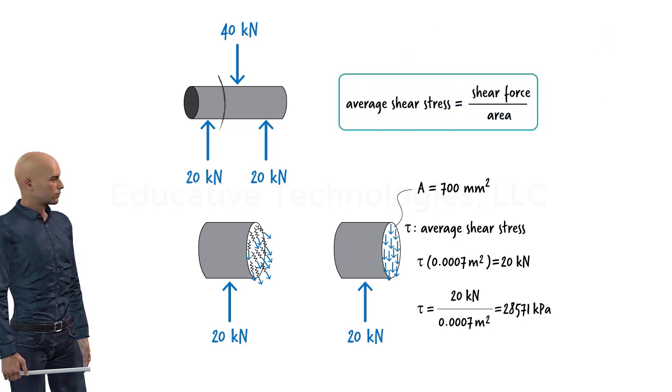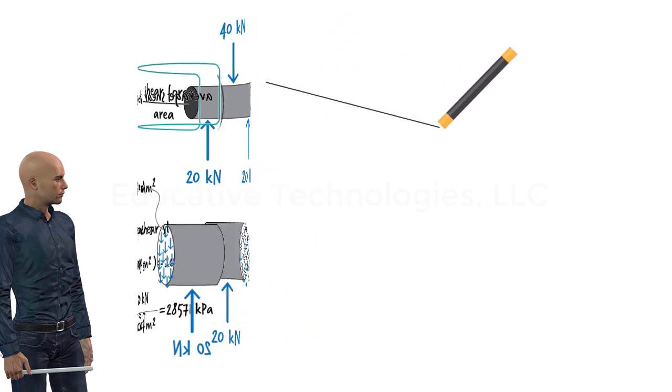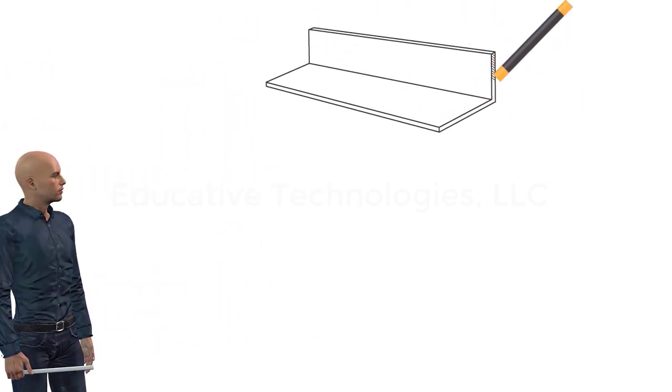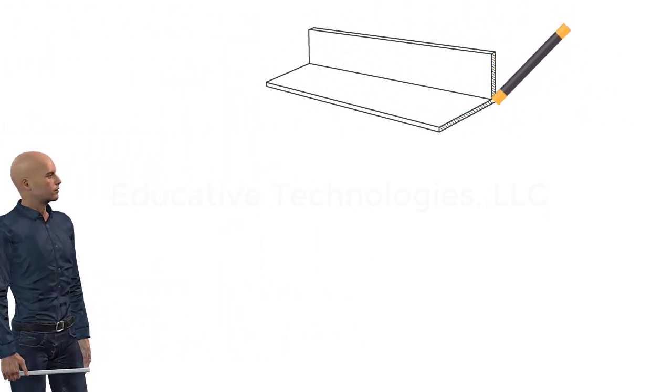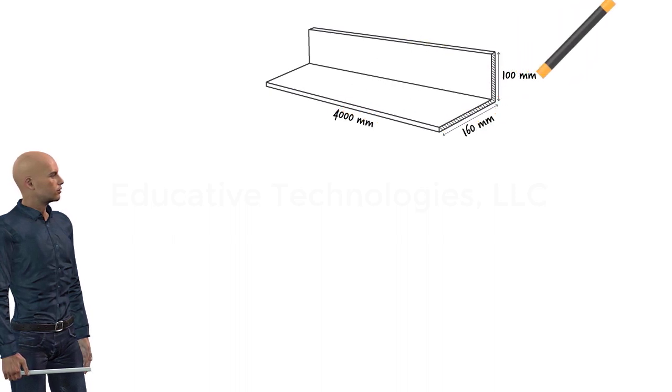Now that we are familiar with the concept of stress, let's work on a couple of example problems. Suppose we have an L-shaped truss member made of structural steel. The member is 4 meters long and has the cross sectional dimensions shown here.